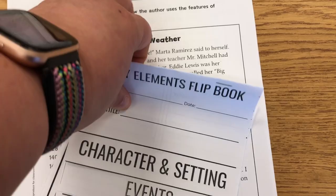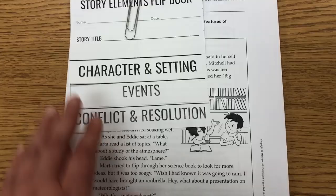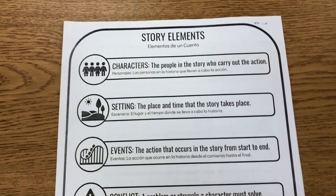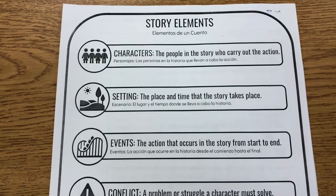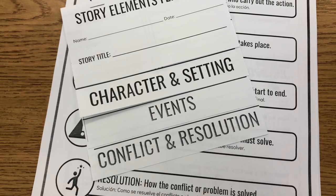For my ESOL students they also have the same passage but it looks a little bit different — they have more sentence starters. I also gave them the story elements anchor chart with bilingual words in Spanish, because all my ESOL students' native language is Spanish. I went ahead and gave it to them so they understood what each element of the story was. I'm okay if they read it in Spanish because I just want to see that they understand, and we're going to use the story elements flipbook this week during class, probably tomorrow, as we introduce the new unit.